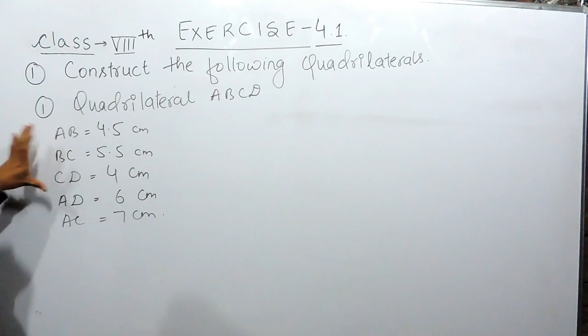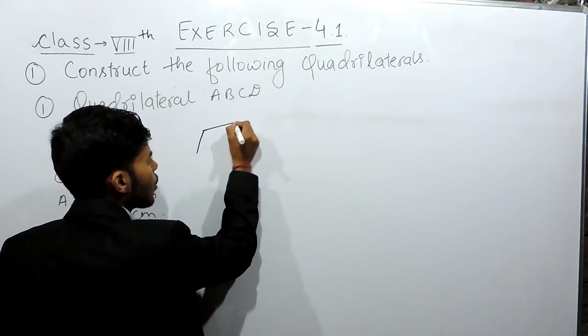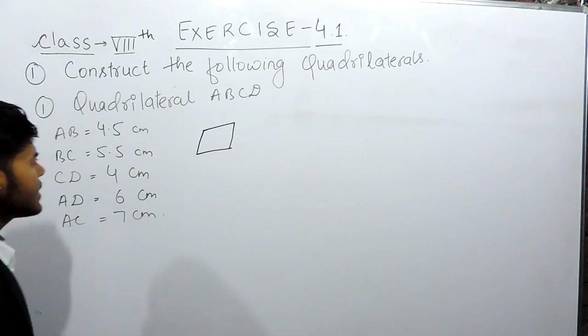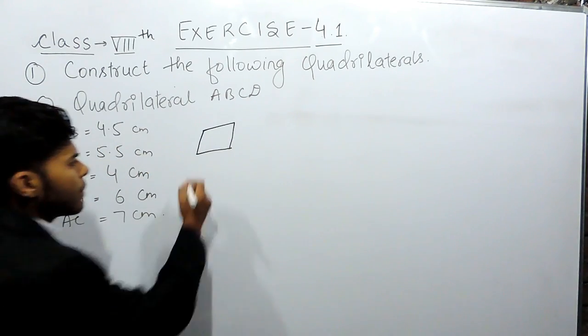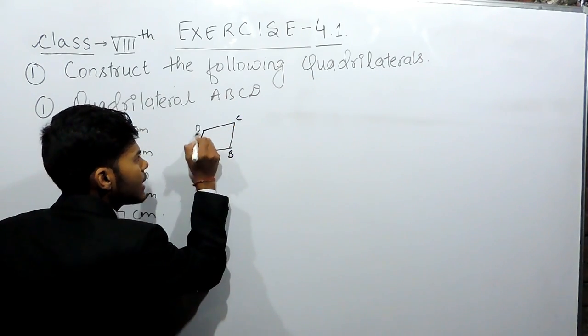Supposingly, this is the quadrilateral. It is having the four sides. Now, name them: A, B, C and D.